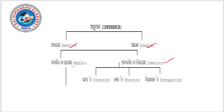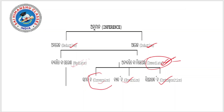Immediate deductive inference has three factors: conversion, obversion, and contraposition. These are the three main forms of immediate deductive inference we will be studying.